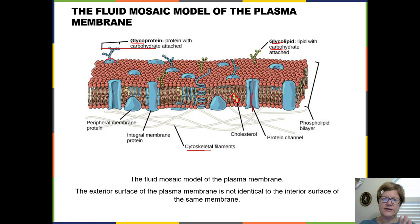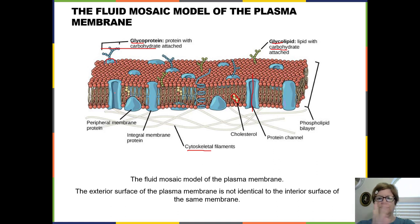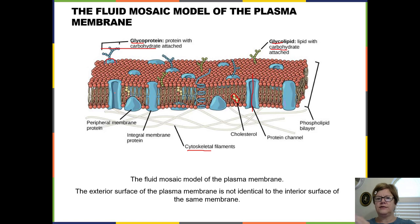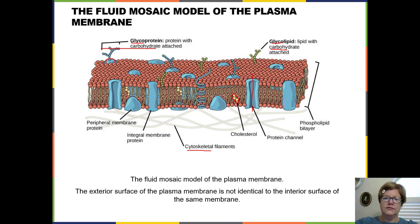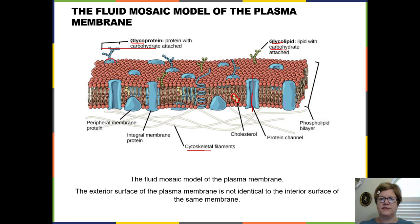Phospholipid heads facing the outside of the cell always stay in the same orientation, but they can move laterally around each other. Kind of like if you're in a very crowded space — you stay with your head up and your feet down, but you can slide around each other. All components stay in the same orientation but can move around each other. This is not a fixed structure; each component is not covalently connected to the next.